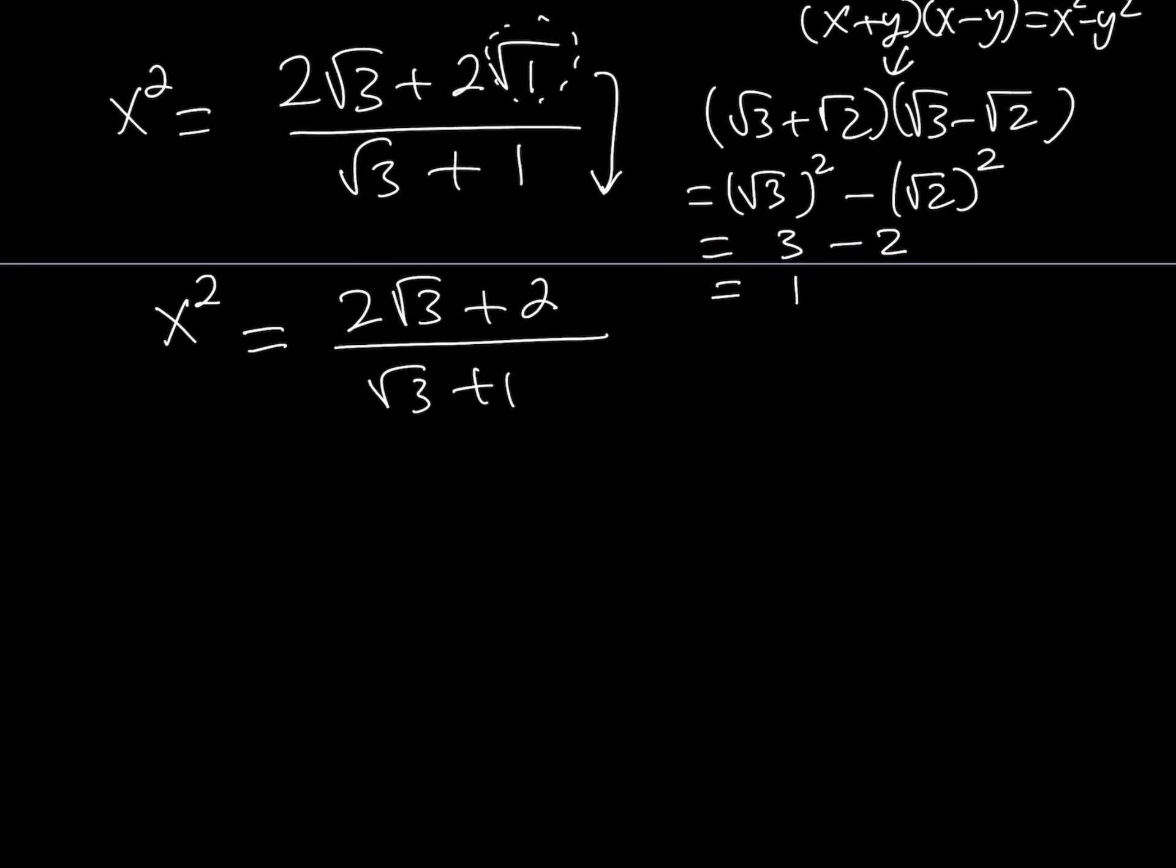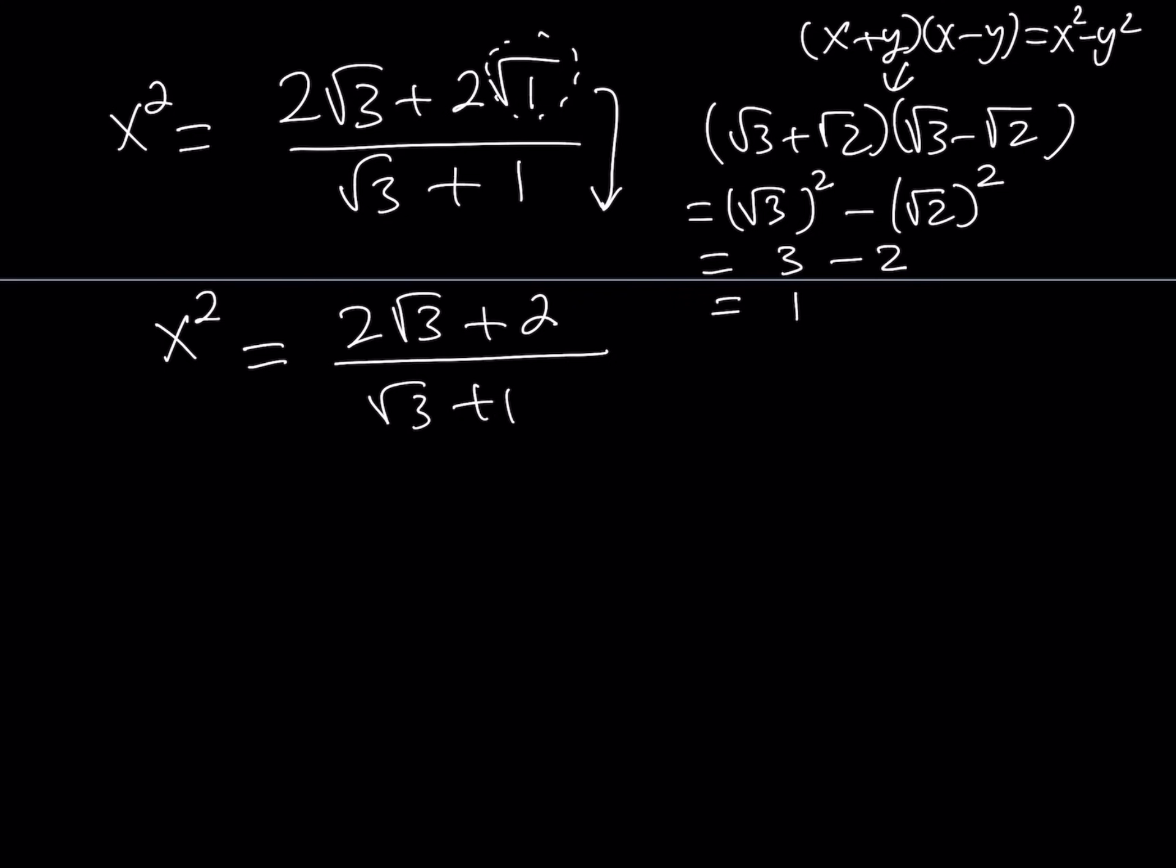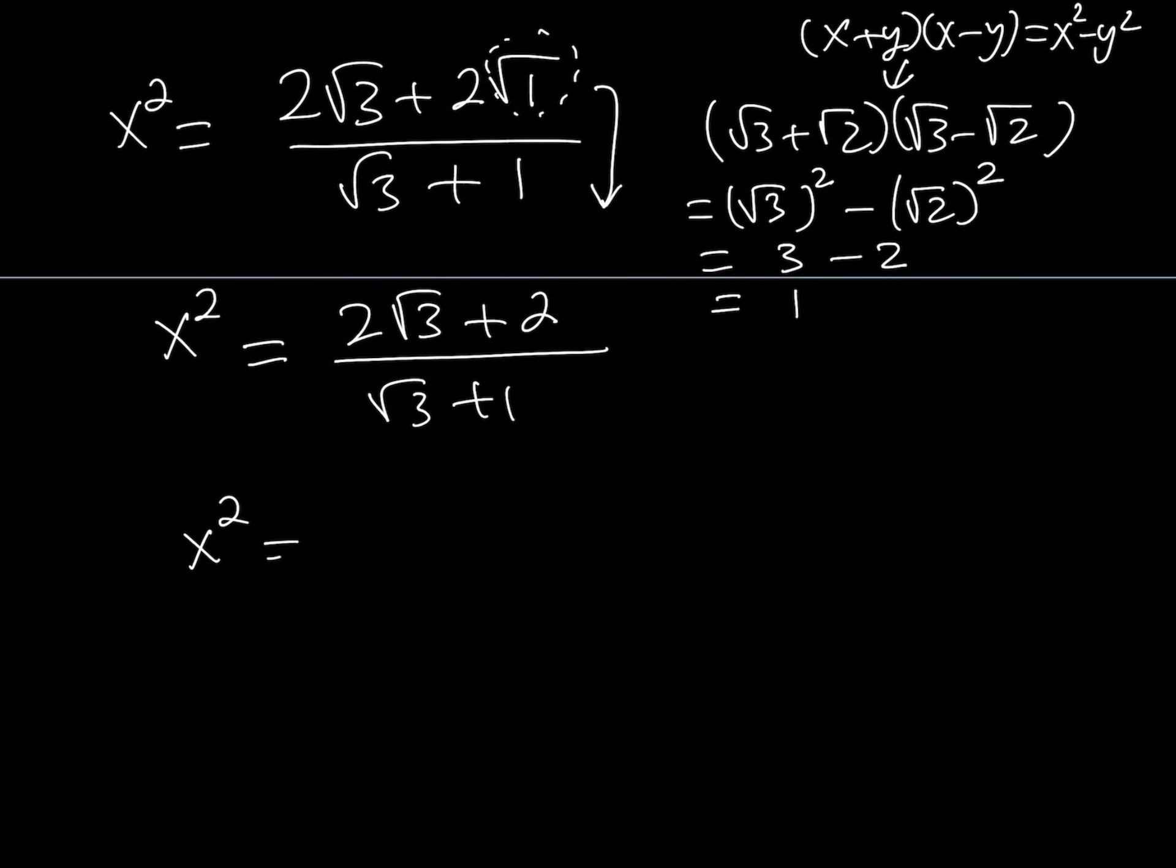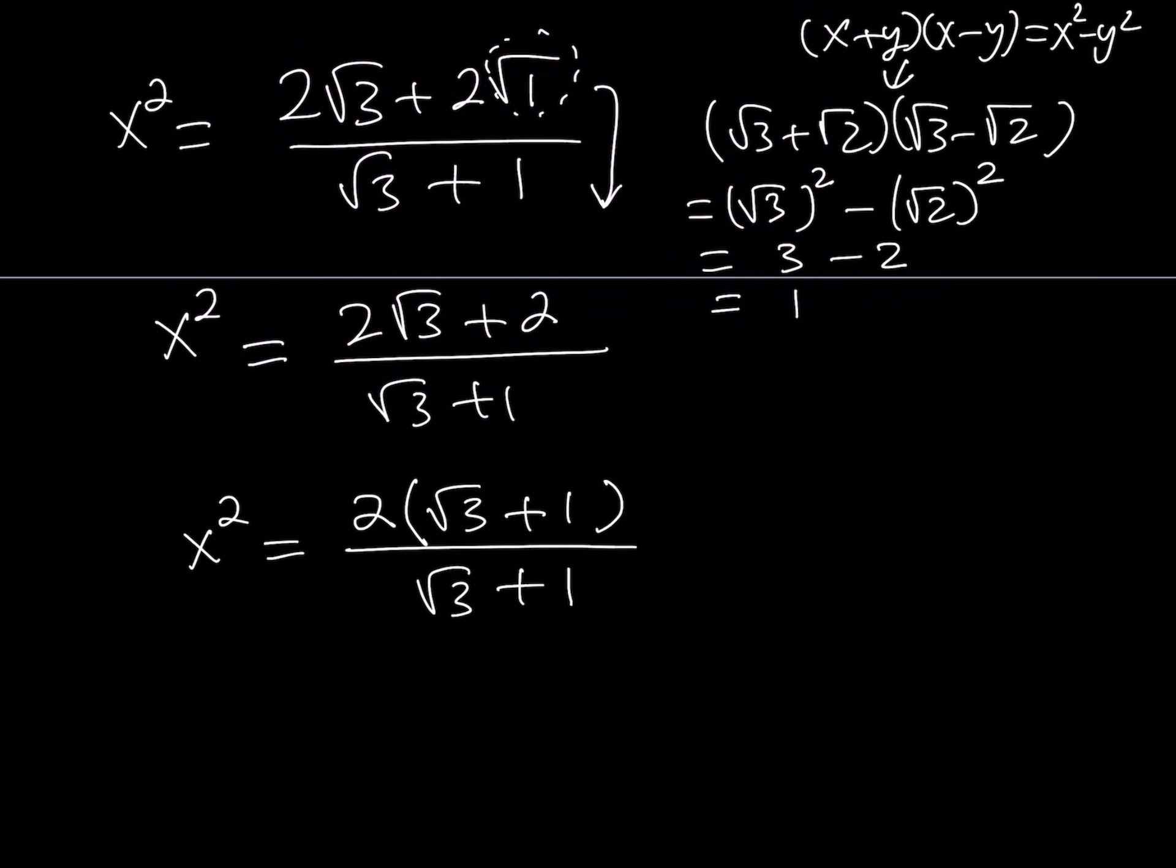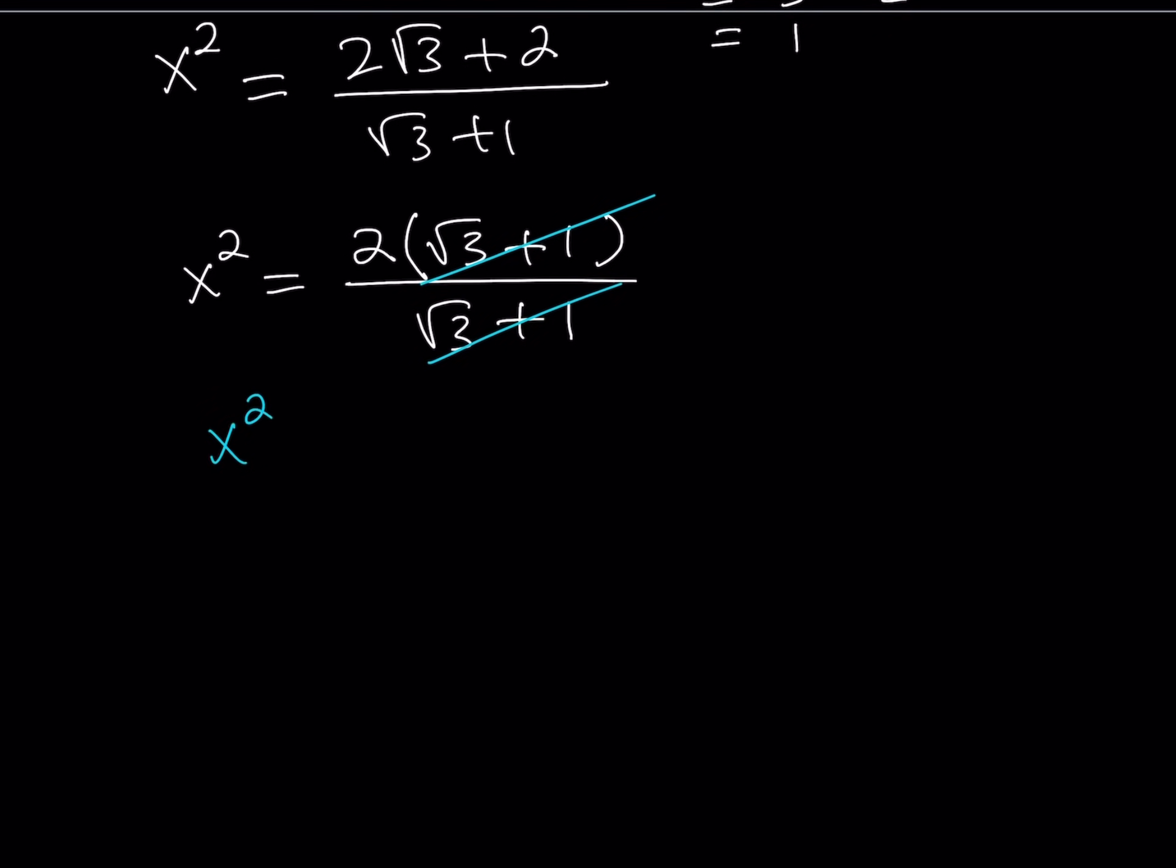A lot of times when we have a radical expression in the denominator, we try to rationalize the denominator by multiplying by the conjugate. So normally, you would multiply by root 3 minus 1, both the top and the bottom, to get rid of the radical. But this is a special case scenario because the top is factorable, and it's actually very nicely factorable. If you take out a 2, you're going to notice that we get root 3 plus 1 inside the parentheses, and at the bottom, we have the same thing. So you can simplify this. Root 3 plus 1 does not equal 0. So we can cross these out. And from here, we get a really nice simple expression, or equation I should say.